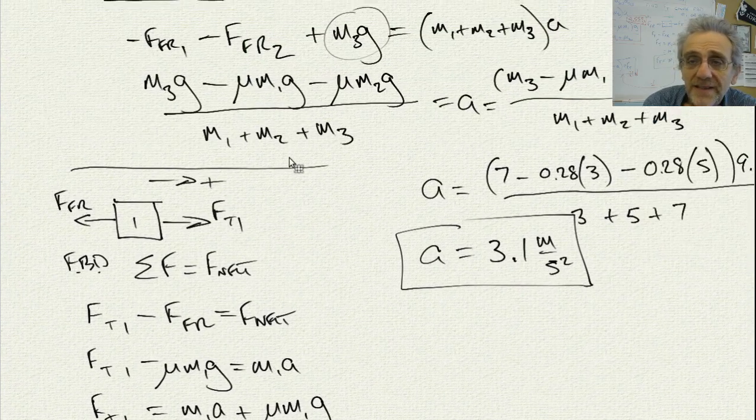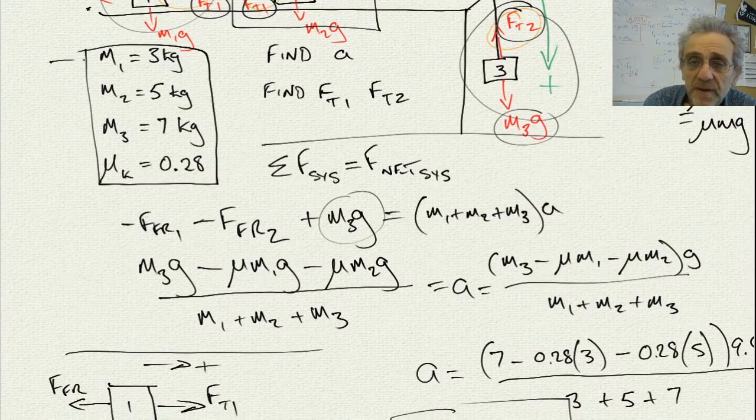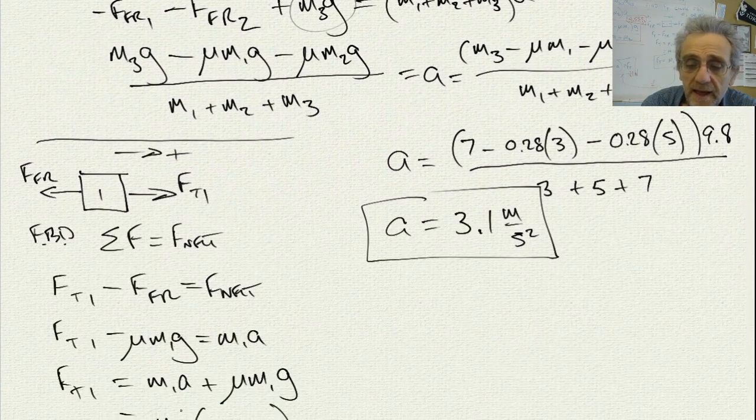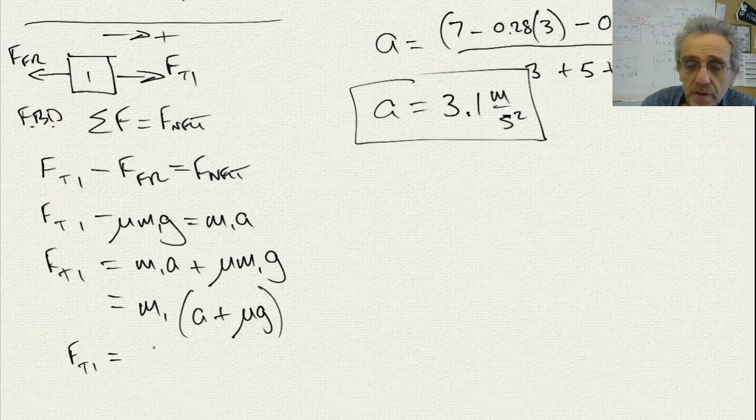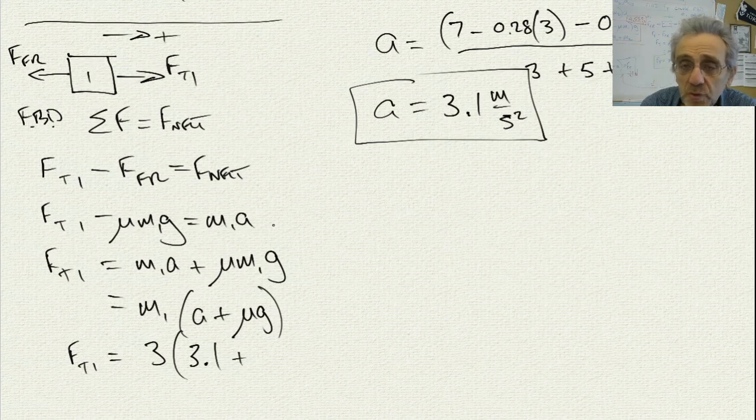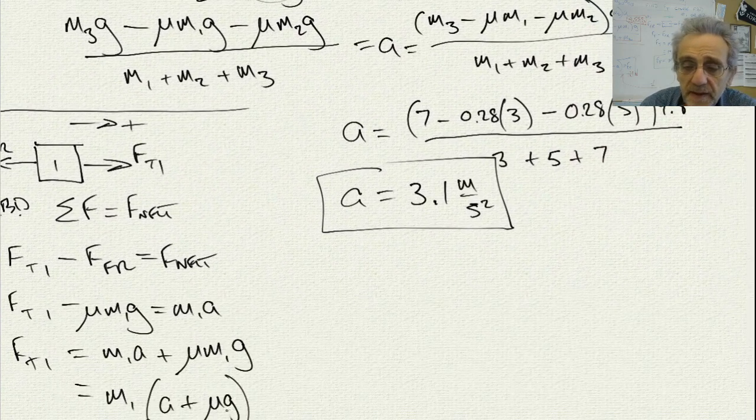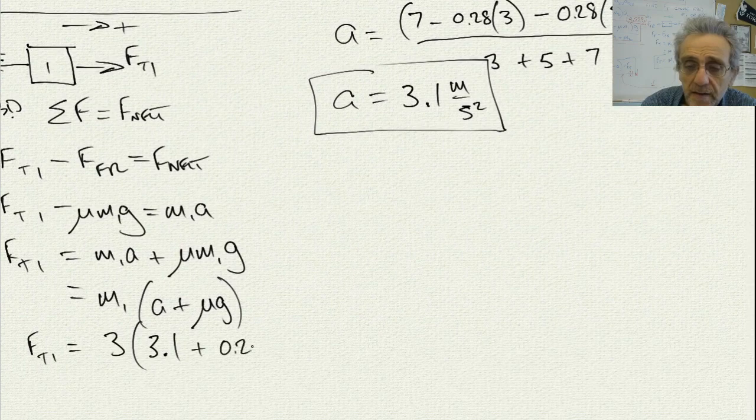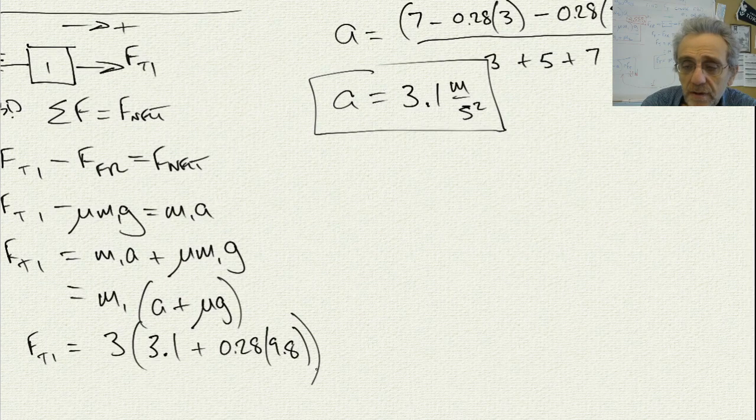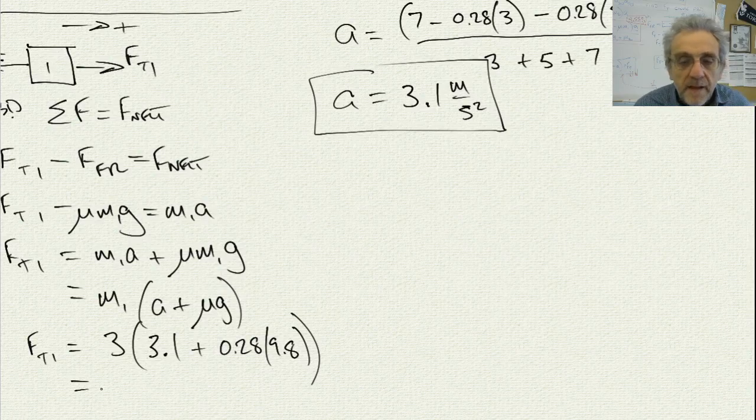And my mass number 1 was 3 kilograms from up here. So I've got 3 times acceleration of 3.1 plus mu, which was given to me as 0.28 times 9.8. And now I get a tension force 1 of, tension force is 17.56 newtons. And that's FT1.